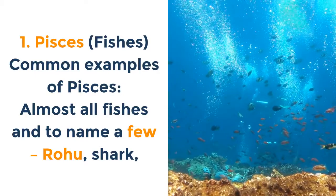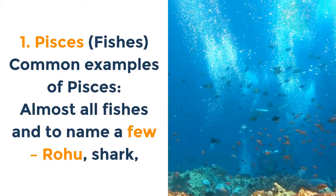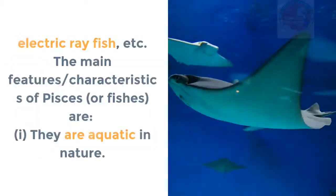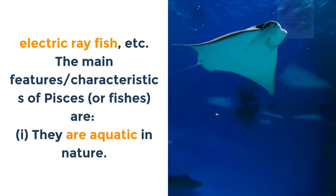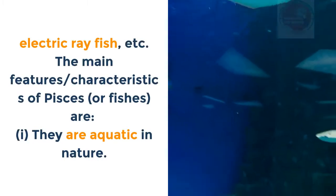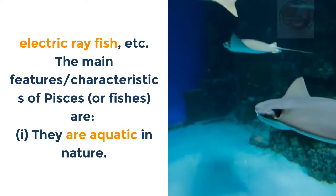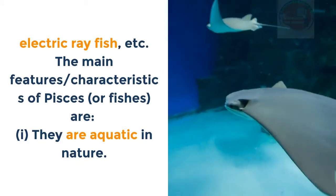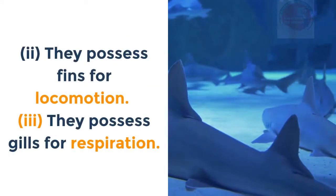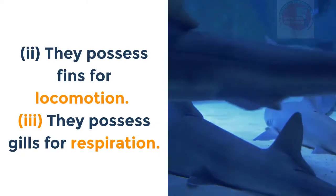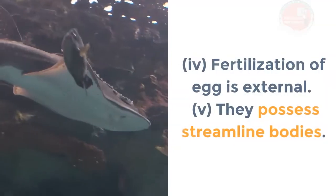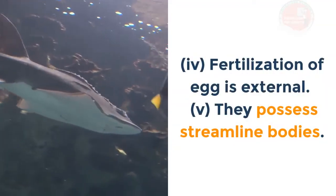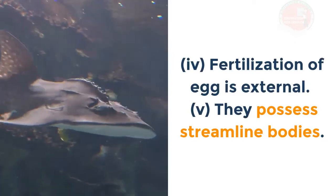Class Pisces (fishes): common examples include rohu, shark, electric ray, etc. Main characteristics: i. They are aquatic in nature. ii. They possess fins for locomotion. iii. They possess gills for respiration. iv. Fertilization of eggs is external. v. They possess streamlined bodies.